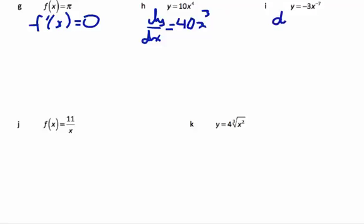Same idea with I, bringing the negative 7 exponent down, multiplied in with the negative 3, we get 21x⁻⁸.